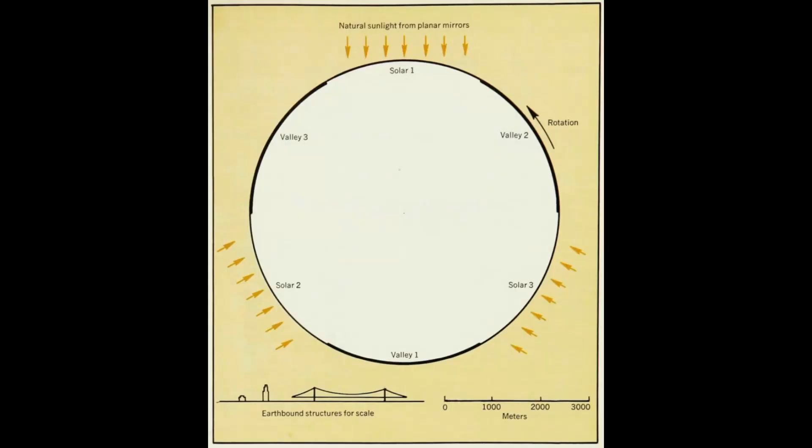So back to Gerard O'Neill's design you can kind of see Valley 1, 2, and 3 have the thicker lines and that's where people would be living and each valley has directly above it a large window and that's where the sunlight comes in thanks to the mirrors.